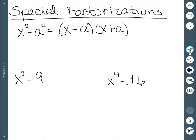So the first example, x squared minus a squared factors into x minus a, x plus a. So the idea is if we have two terms that are both squared and a minus sign in between it, we can factor it.